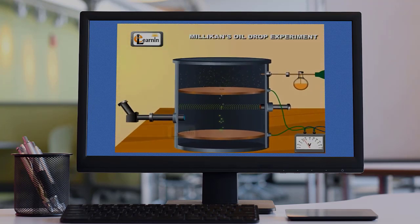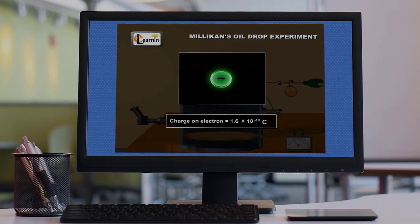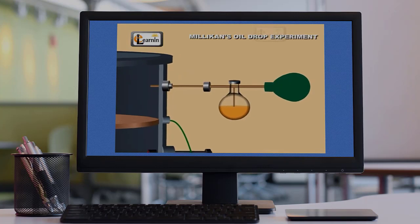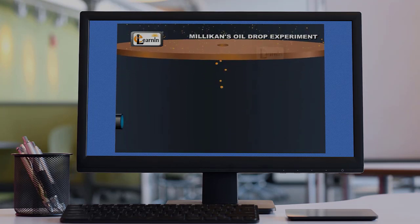Millikan's oil drop experiment. Using this method, he calculated that the charge on an electron was about 1.6 times 10 power negative 19 coulombs. In the Millikan's oil drop method, an atomizer produces oil droplets in the form of mist which are sent through a plate of electrical condenser.